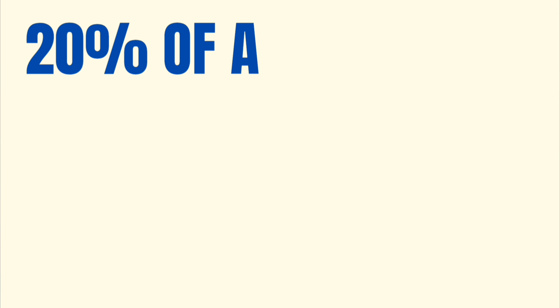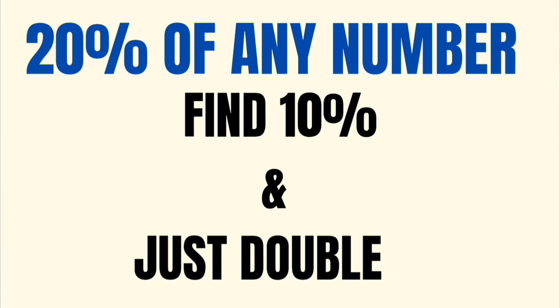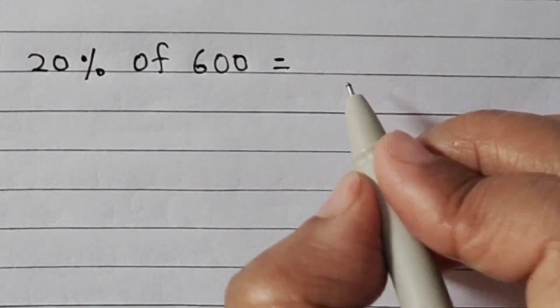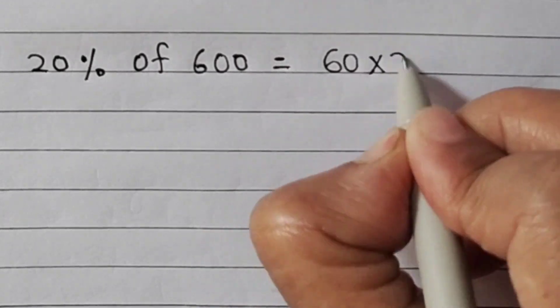Now, let's learn to find 20% of any number. Here also, we will find 10% first. Then we will double it. We will multiply it by 2. 20% of 600 is, 10% was 60. We will double it. It will be 120.